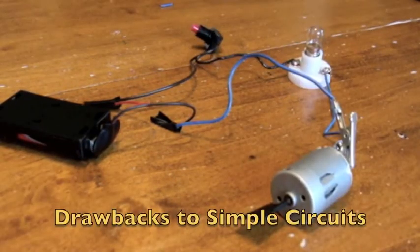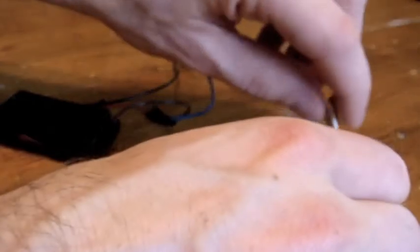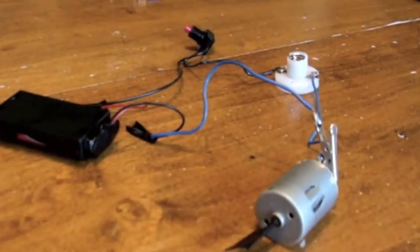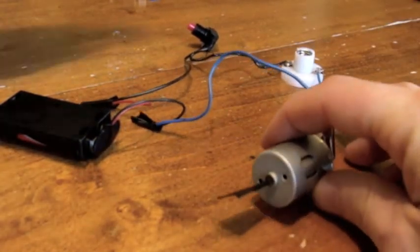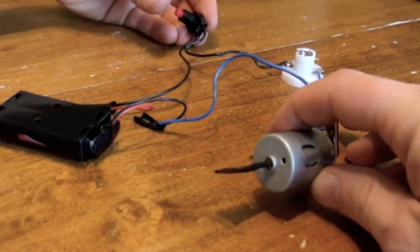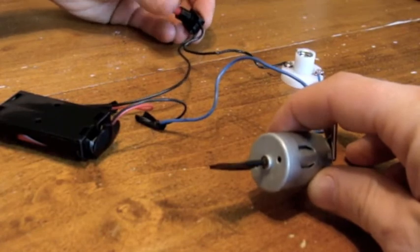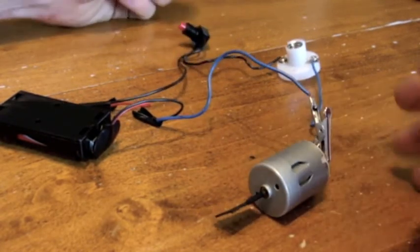Simple circuits are actually pretty easy to put together, but they have one drawback. If there is a break in the circuit, in the loop, the current won't flow and nothing will work. So if I take out my bulb, you'll see that when I press the switch, the motor won't work as well. There's no way for the current to keep flowing with the bulb missing. So that is one drawback of a simple circuit.